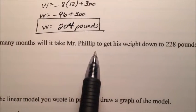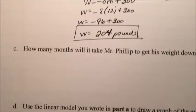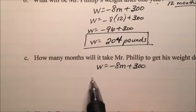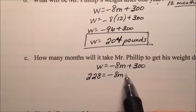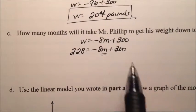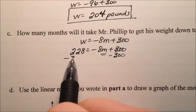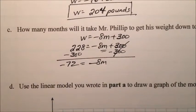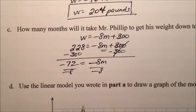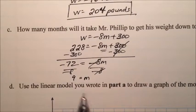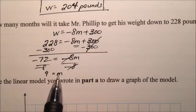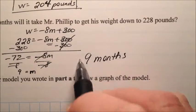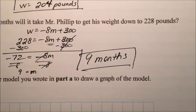Part C says, how many months will it take Mr. Phillip to get his weight down to 228 pounds? So the weight is 228 pounds. We'll start with our model. 228 pounds equals negative 8M plus 300. So we're looking for the number of months here. We can subtract 300 from both sides. We'll be left with negative 8M, and it looks like it'll equal negative 72. So we can divide by negative 8 on both sides, and we should get M equals 9. And what does that represent? 9 what? Well, it's M, and M is months. So it'll be 9 months. So it'll take 9 months for Mr. Phillip to get down to 228 pounds.